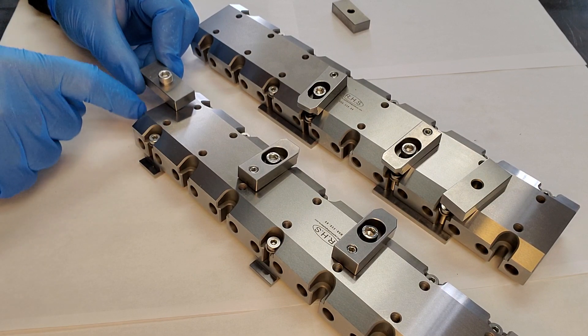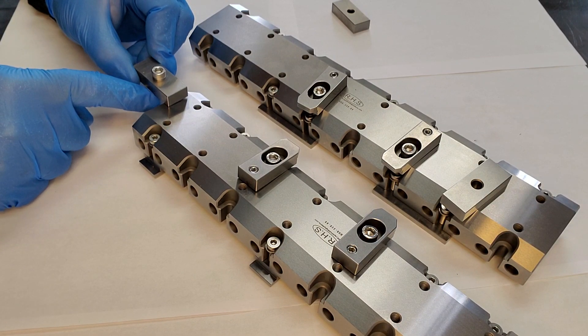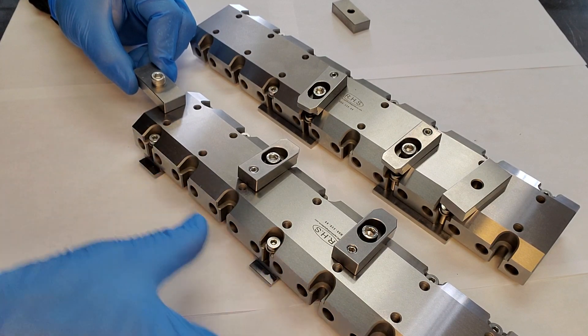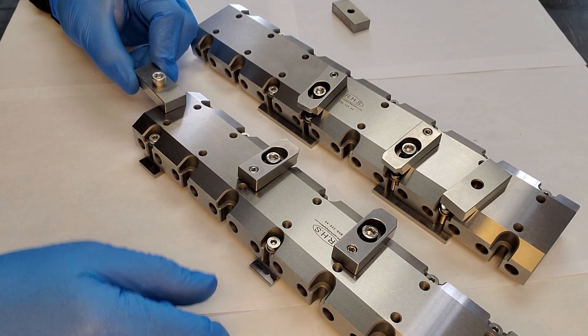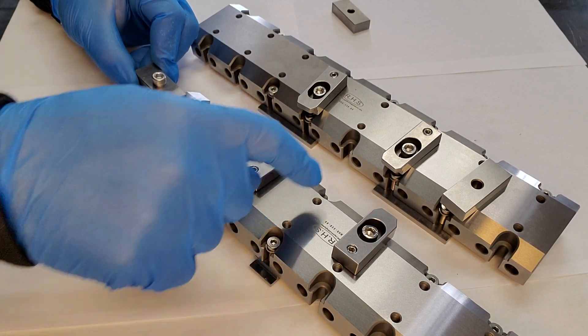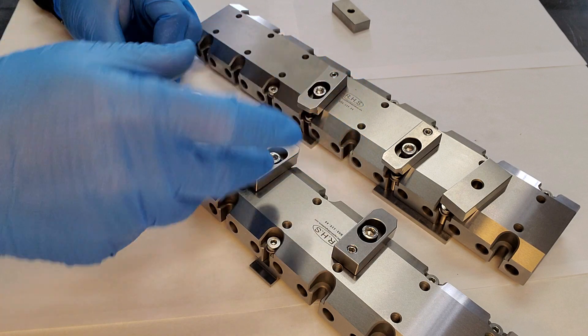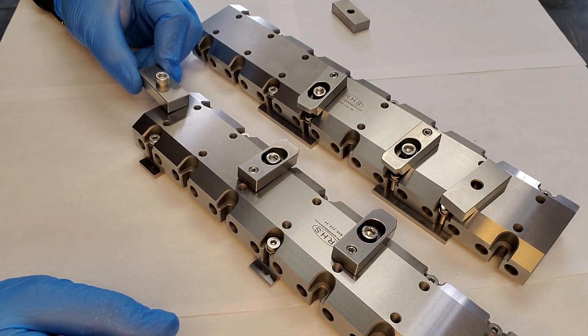So this screw would screw into your clamping beam on your machine and then it would hold these pieces down. Then your work pieces in your wire EDM would sit wherever you want along these datums. These are nice because they're two-sided, so you can put work pieces on either side and maybe get a little more production out of your wire EDM.